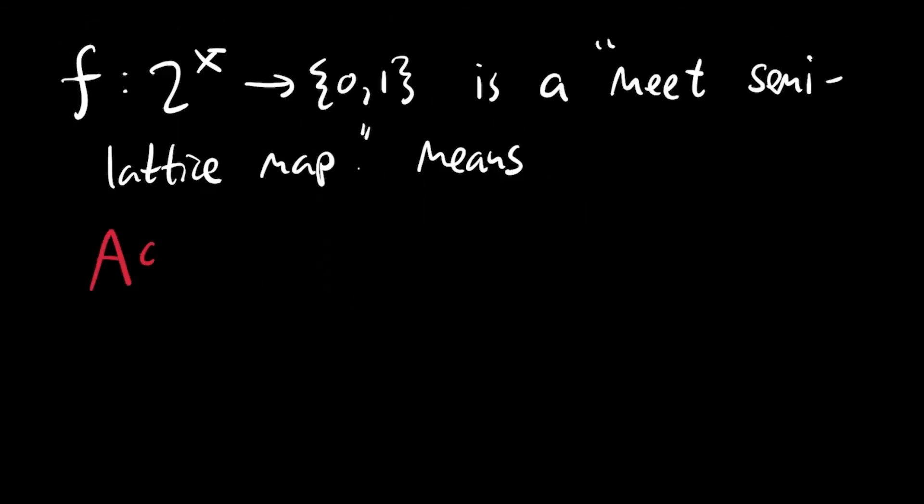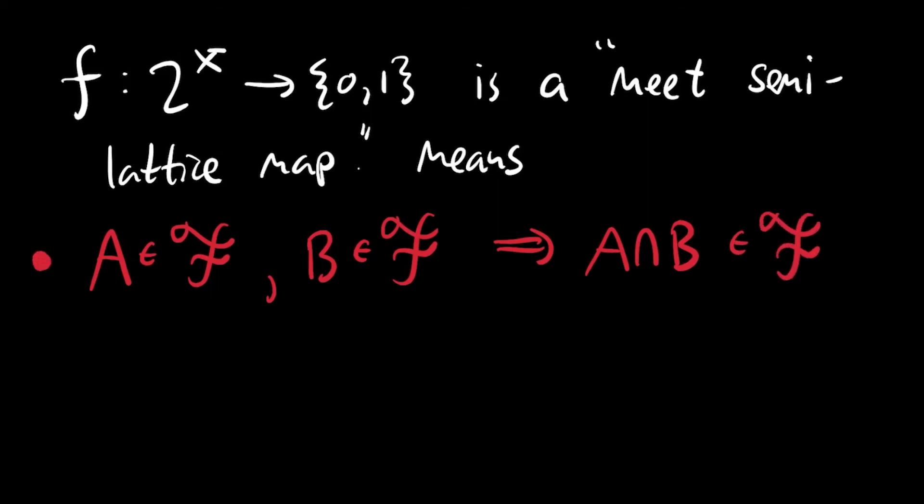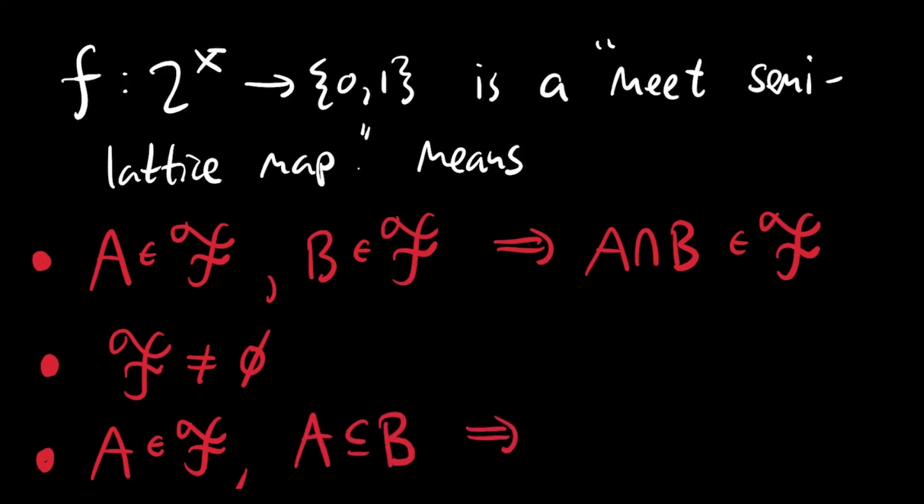So what does this mean for the subsets of X that get sent to one? Well, as we said, it respects intersection. So if A is in this set script F and B is in script F, their intersection is in script F. Because f respects units, it sends X to one. So X itself is in the collection. And so this collection of sets script F isn't empty. And it's also upward closed, meaning that if A is in F and A is contained in B, then B must be in this collection F. And that's just because A equals A intersect B. So f(A) has to equal f(A) times f(B). So if f(A) is one, f(B) must be one.